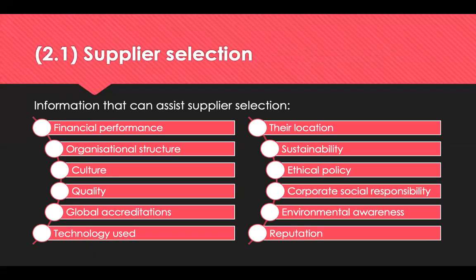Supplier selection is about conducting research on potential suppliers to gather information on aspects such as financial performance, organisational structure, culture, quality, ethical policies and corporate social responsibility, sustainability, environmental awareness, reputation, global accreditations, technology used and location. Consider: what's the process for supplier selection in your organisation? What aspects are researched and which methods are used? Do you ask suppliers to complete a questionnaire or search their website? And which aspects are given more priority or weighting — does it depend on the nature of the contract?